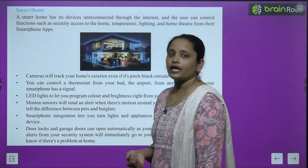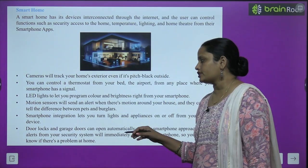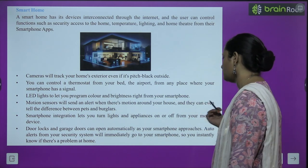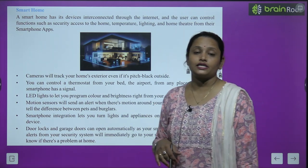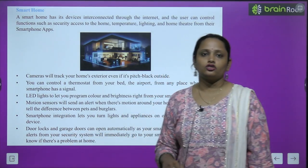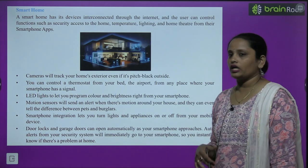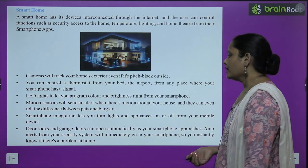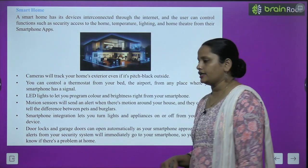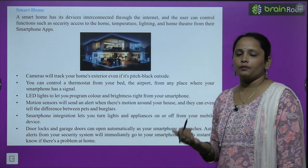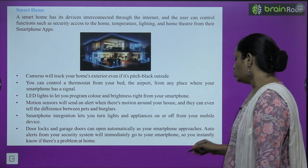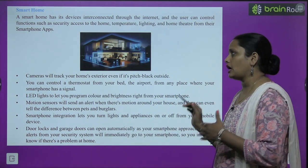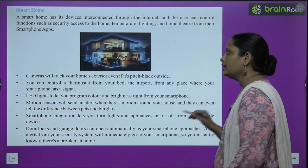Cameras can even tell the difference between pets and burglars। Now comes smartphone integration — so smartphone integration आपको बताता है कब आपको light turn करनी है, कौन से appliances on या off हैं। घर के दरवाज़े lock हैं या नहीं, garage के doors lock हैं या नहीं — उन्हें automatically open या close कर सकते हो अपने smartphone से। Auto alerts from your security system will immediately go to your smartphone, so you instantly know if there is a problem at home।